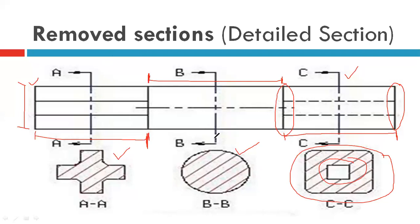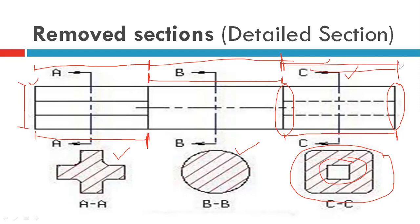You can draw this figure in an examination — this is one of the best examples for sectioning. Whenever a sectioning question appears in the examination, you can draw this figure. Assume any dimensions; for example, consider the total length as 90 mm, one portion as 30 mm, another as 30 mm, and another as 15 mm. You can assume dimensions — we are not focused on exact dimensions, but only on showing the sections correctly.